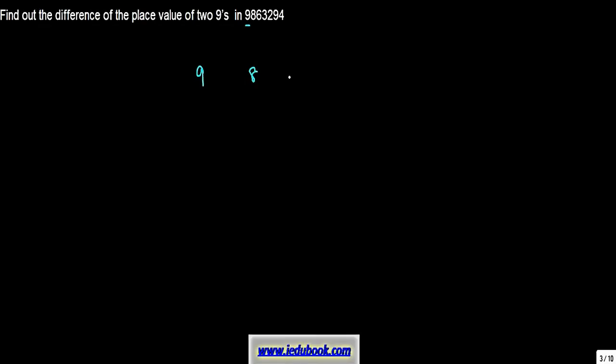Just rewrite this with some gaps. This number basically has two nines, one out here and one out here. The question is to find out the difference of the place value of two nines in this number. So the first thing you have to do is let's call these two nines as a and b.